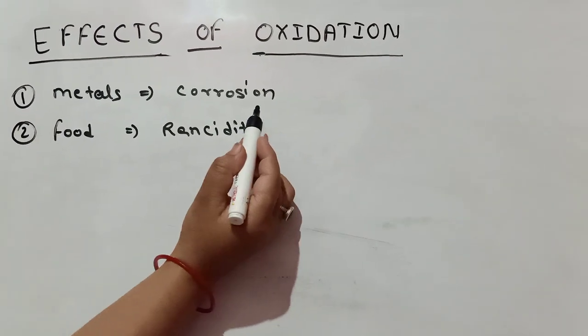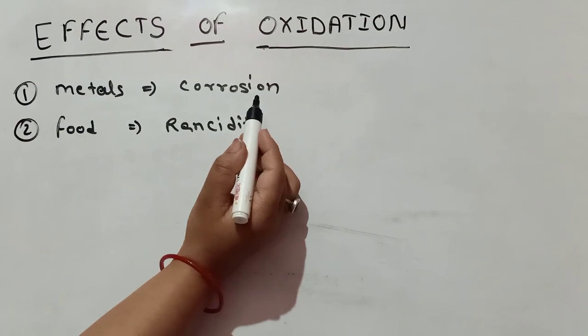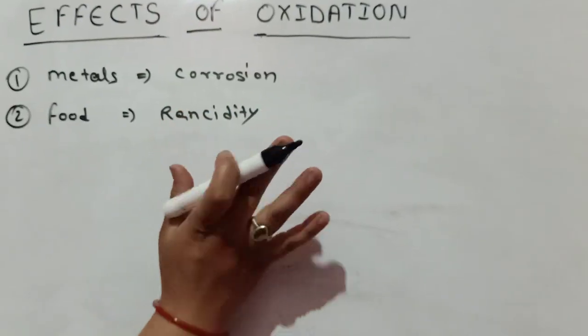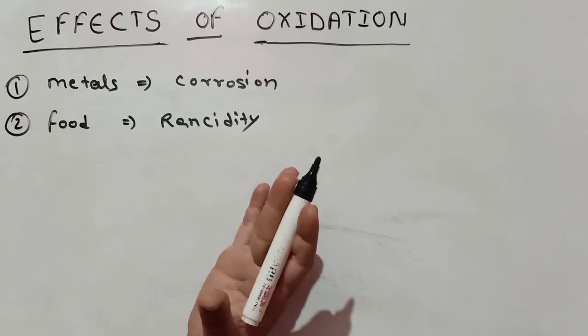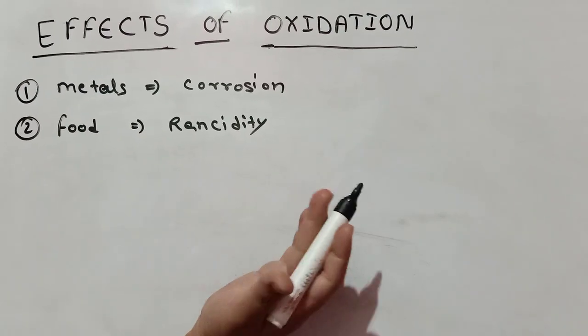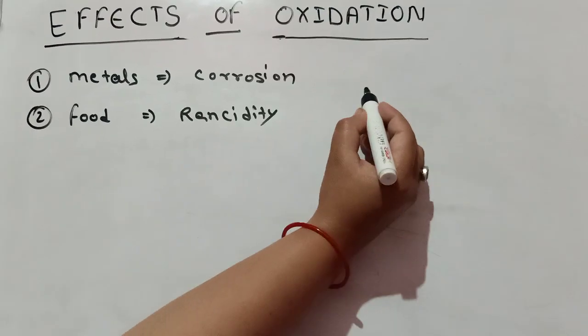So, what is corrosion? Corrosion is a process in which metals are eaten away gradually by the action of air, moisture and other chemicals like acid on the surface.